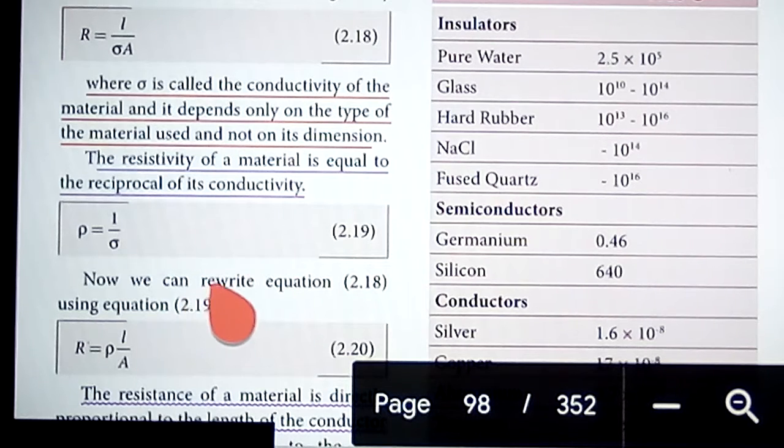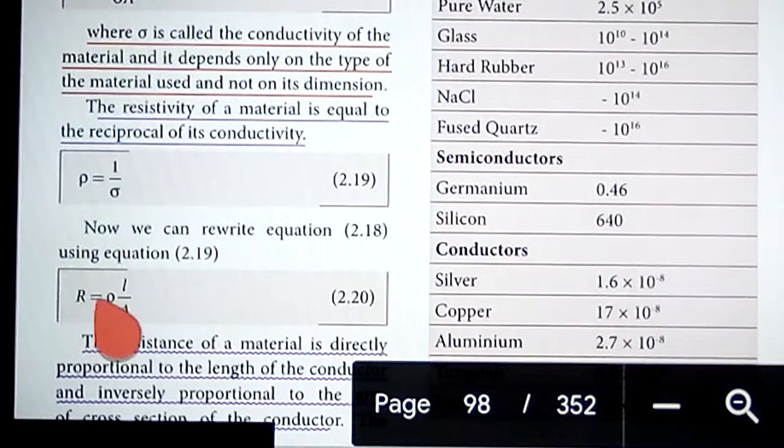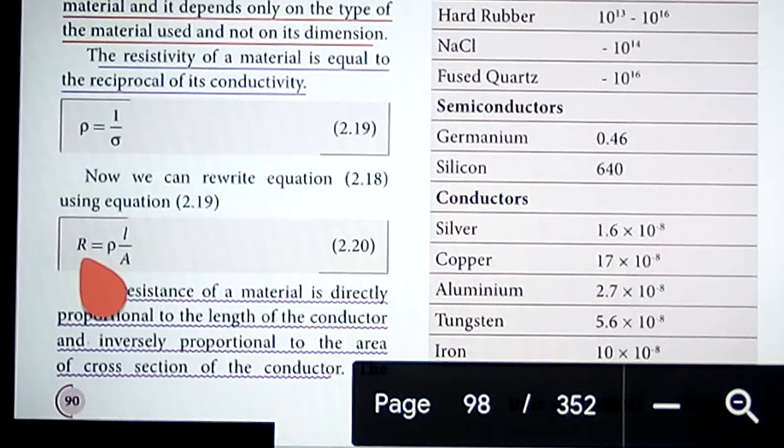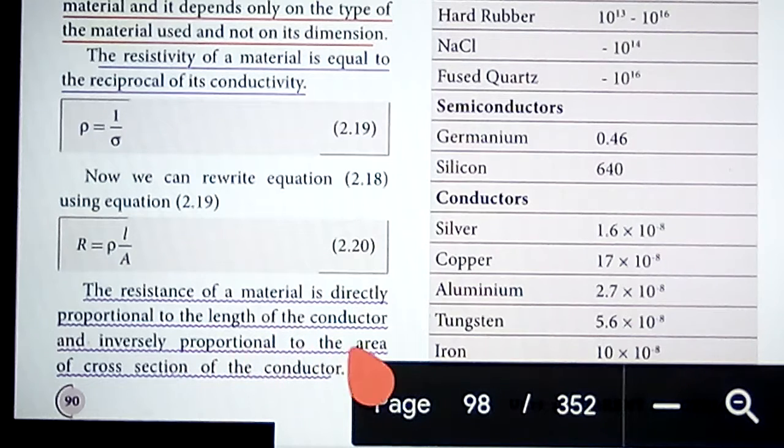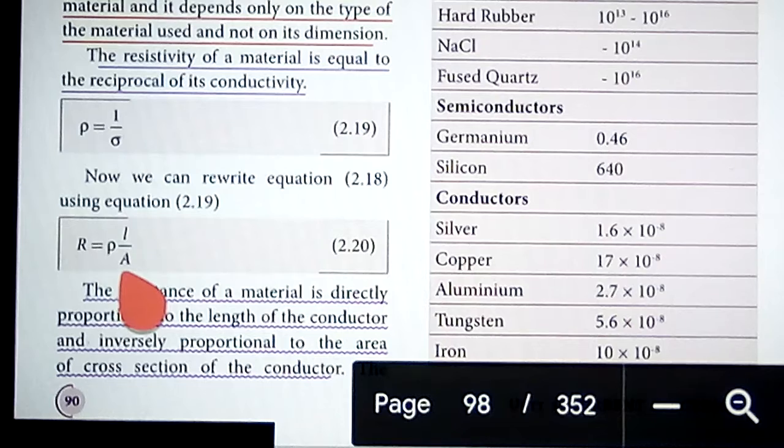Now we can rewrite the equation 2.19 as R equals rho into L by A, where R is the resistance of the material of the conductor and it is directly proportional to the length of the conductor and inversely proportional to the area of cross section of the conductor. L is the length and A is the area of cross section.